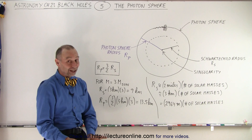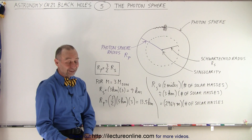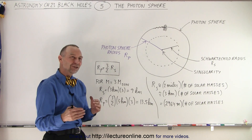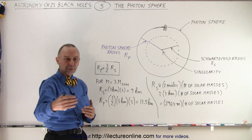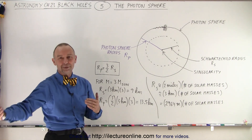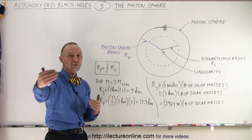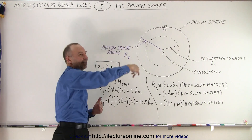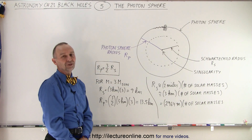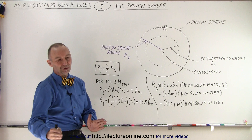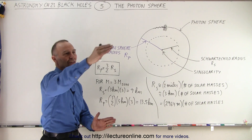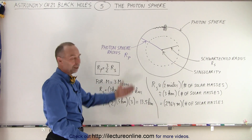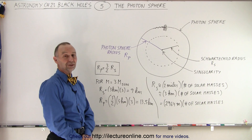If an object gets close enough to a black hole, it will get pulled in. But if it doesn't get quite close enough, the object would simply get deflected and continue on, never getting pulled into the black hole — just like when a satellite goes close to Jupiter, gets pulled, changes direction, and receives a gravitational boost. That would be quite a gravitational boost off a black hole.